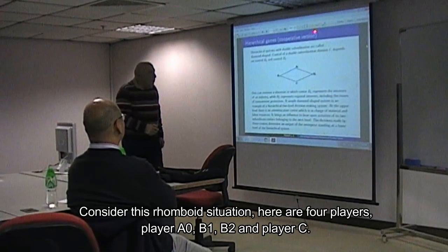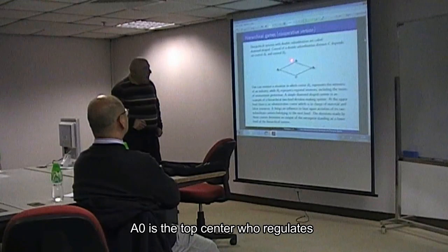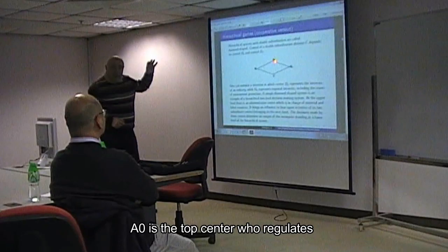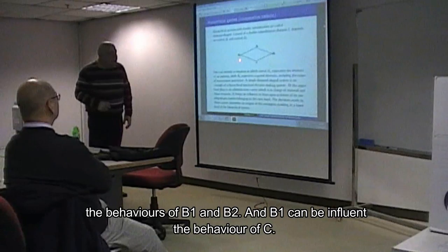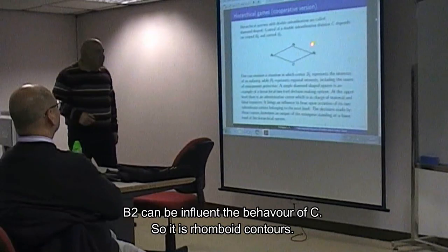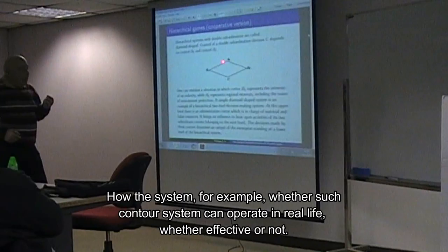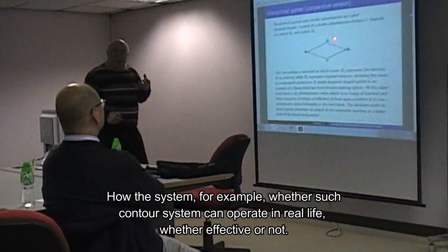Consider this rhomboidal situation. We have here four players: Player A0, B1, B2, and Player C. A0 is the top center who regulates the behavior of B1 and B2. B1 and B2 can each influence the behavior of C. So it's like a rhomboidal control system. The problem is whether such control systems can really operate in real life, whether they are effective or not.